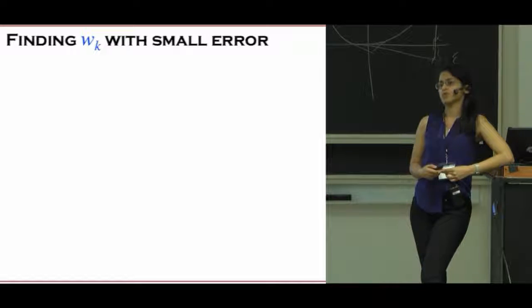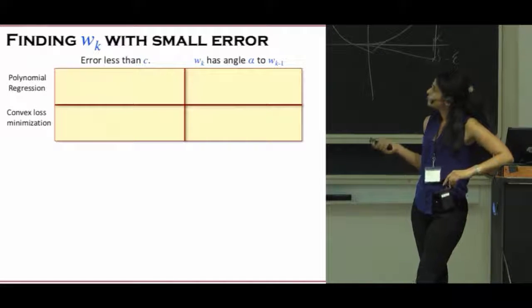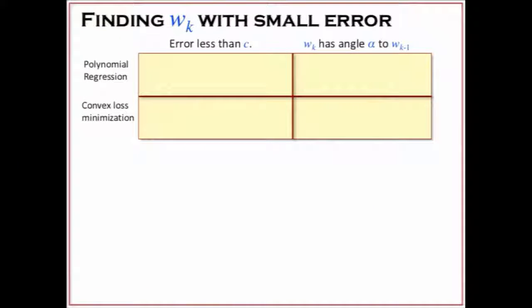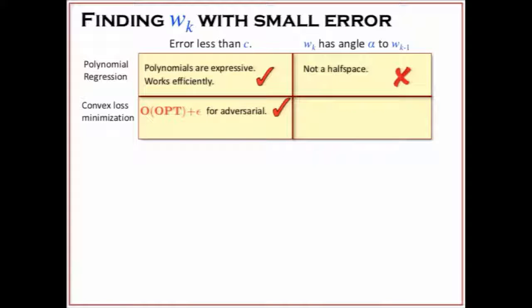So how can we achieve these two properties? We are going to consider two algorithms: polynomial regression and convex loss minimization like hinge loss. Polynomials are quite expressive. If you want a constant error, you can achieve that with a constant degree polynomial. But the outcome is not a half-space, so we cannot repeatedly do what I was explaining. For convex loss minimization, you can achieve this constant approximation for adversarial. But if you want to achieve opt plus epsilon, you can only do it when the noise is very small. But the good thing is it's very easy to find the half-space that's within a certain angle because that's just a constraint you're going to add.